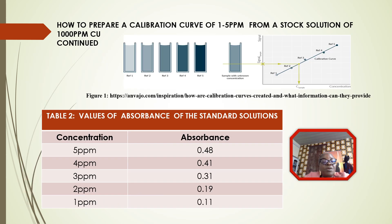When we are finished preparing our solutions at the needed concentrations, we will read the absorbance of those solutions using AAS or any equipment of our choice. The researcher has prepared 5 solutions and also prepared a sample with unknown concentration — the sample whose concentration he wants to find, for example the concentration of copper in a water sample. He will then plot an absorbance against concentration graph.